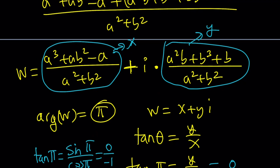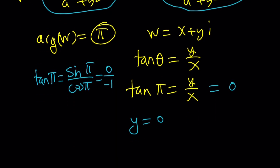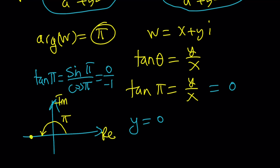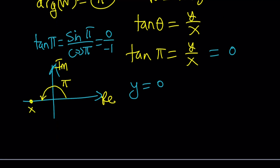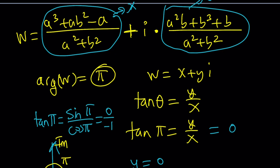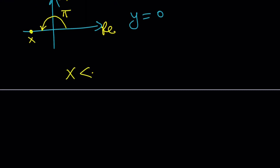Obviously X should not be zero, and it won't be. So Y equals zero means there is no imaginary part. The real part can be anything, but notice we got zero divided by negative one. If the argument is pi, you have to think about it this way: you end up with a negative real number. The number is complex but also real, so the real part — which is X — needs to be less than zero.